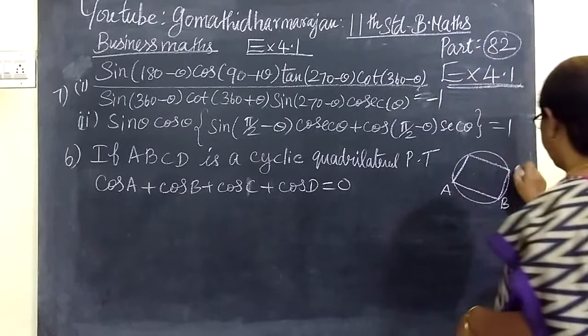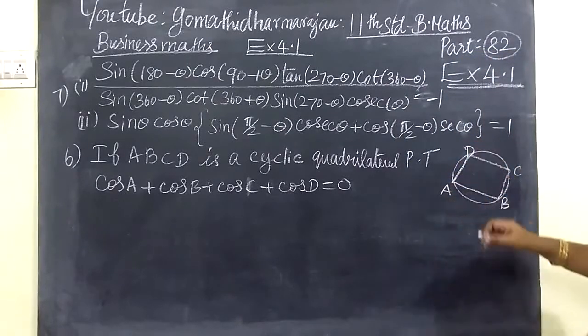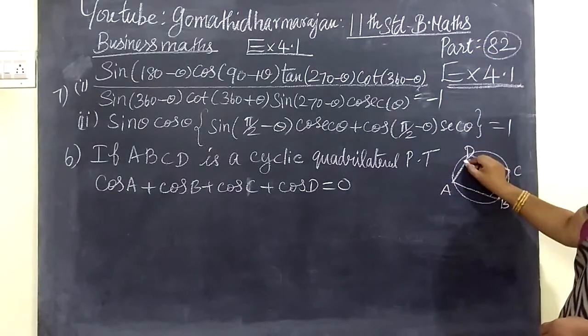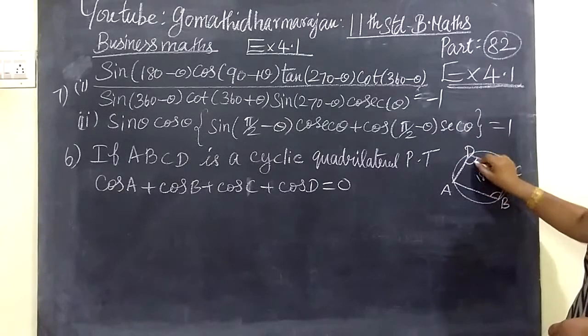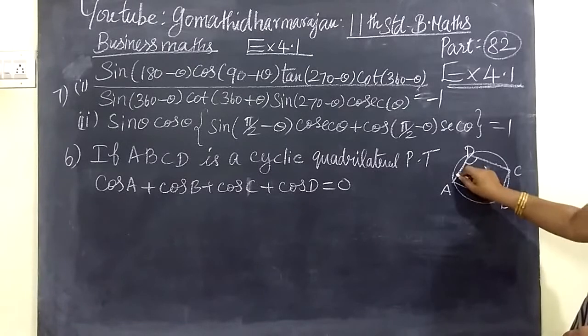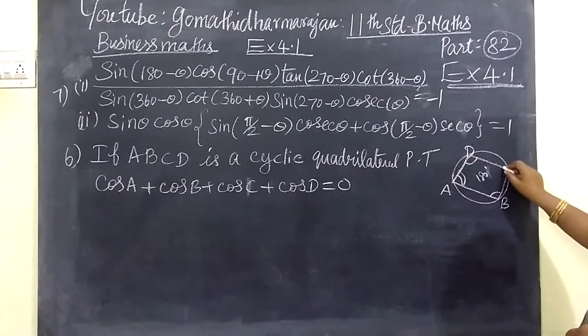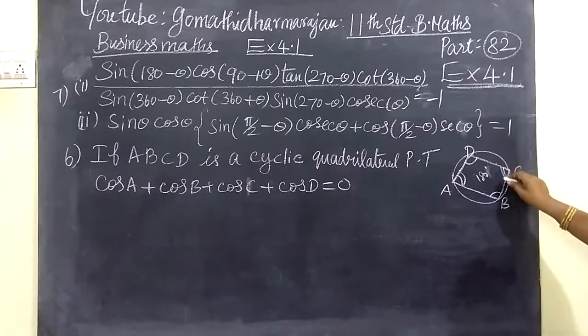In a cyclic quadrilateral, the property is that the sum of opposite angles equals 180 degrees.